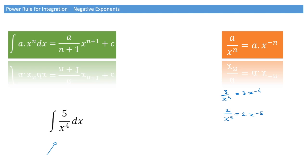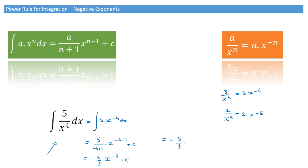Let's go ahead and do this. The integral of 5 over x to the power of 4 can be rewritten as the integral of 5 times x to the power of negative 4. Now, using the power rule, that equals 5 over negative 4 plus 1, times x to the power of negative 4 plus 1, plus c. That leads us to negative 5 thirds times x to the power of negative 3 plus c, or equivalently, negative 5 thirds times 1 over x cubed plus c. That's how we use the power rule to deal with powers of x on the denominator.